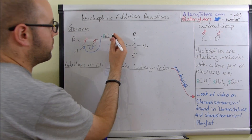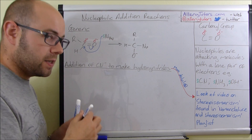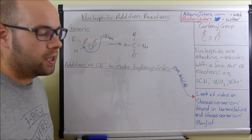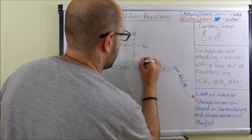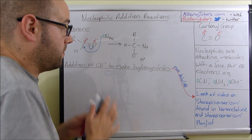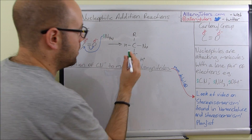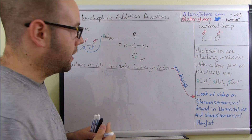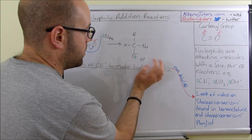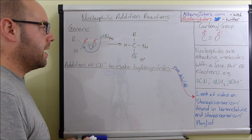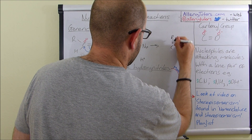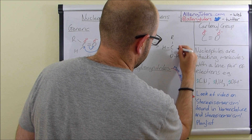The nucleophile will be dissolved in solution, and as part of that you have a source of H plus ions. Sometimes your nucleophile might be dissolved in acid, which would obviously provide lots of H pluses. One of the lone pairs of electrons on the oxygen will then move onto the H plus, and they will effectively join together. The final product is C-R-H-OH-Nucleophile.